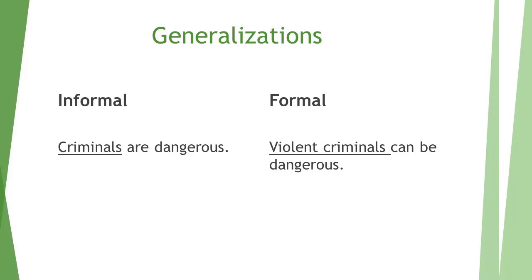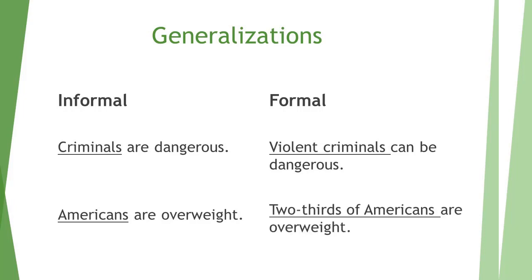Another example of an informal generalization is saying 'Americans are overweight.' To become more formal, you give more specifics and be more accurate: 'Two-thirds of Americans are overweight.' You can tell this is the type of language that would be used in a research paper or a class essay, where your instructor would like you to be more accurate in your writing.